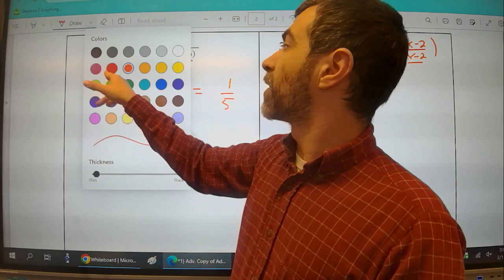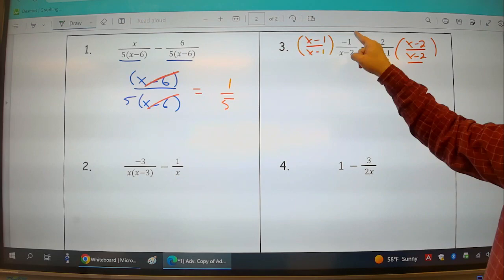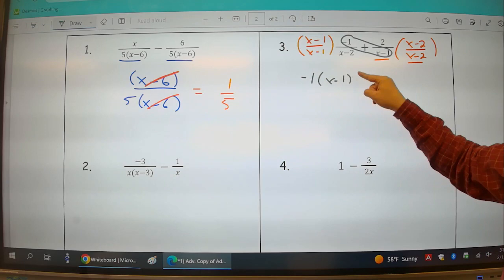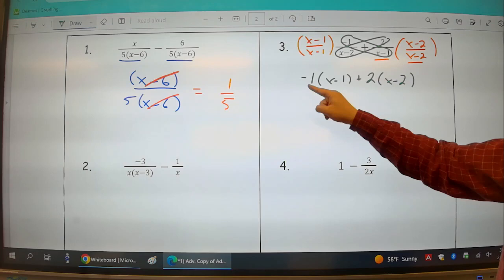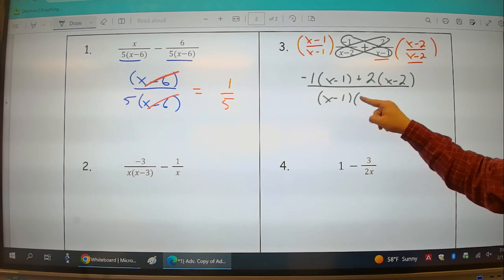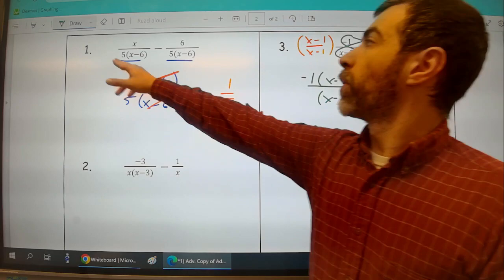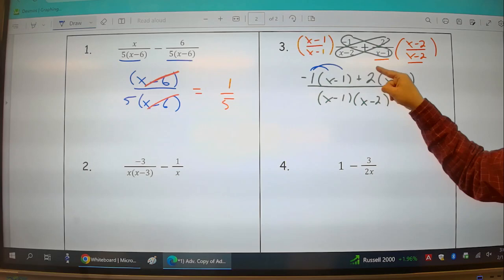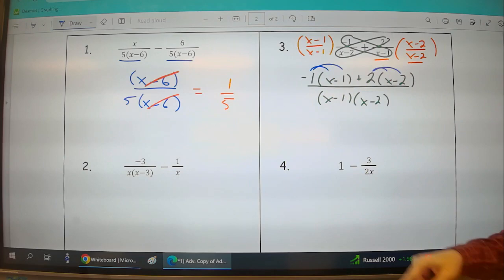Now in our notes we also said what I could have done is just cross-multiplied and then added their products. So I could do negative 1 times x minus 1 plus 2 times x minus 2 over my common denominator, which will be x minus 1 times x minus 2. But we still need to simplify. That's only the first part of the problem. Now the next thing to do would be to distribute across so that I can begin to combine like terms.